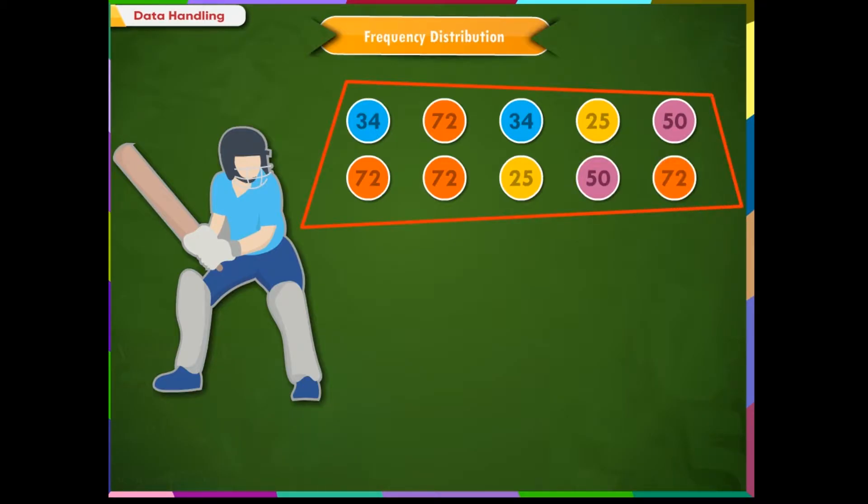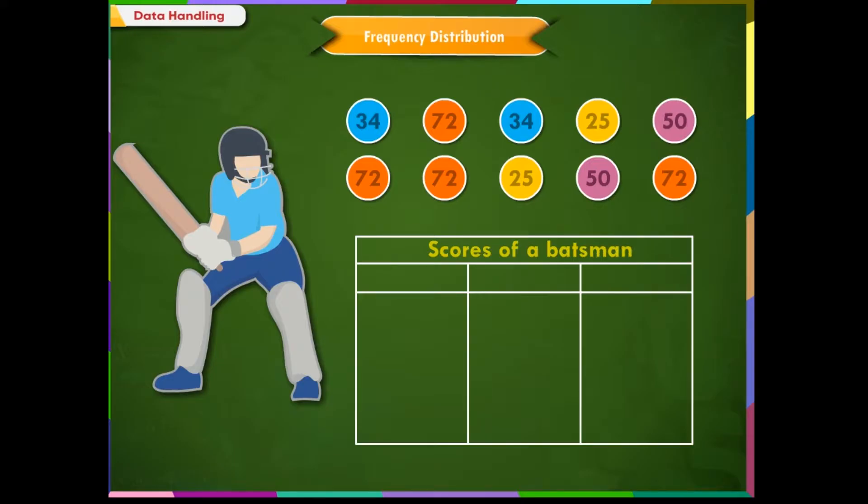Let us convert this raw data into a table for better understanding. For this, we draw a table with heading Scores of a batsman and then three subheadings: Observations, Tally Marks, and Frequency. We read the raw data and put the tally mark against the appropriate observation. Write the numbers in ascending order in the observation column.